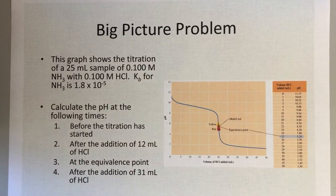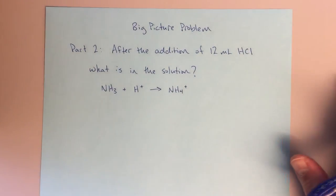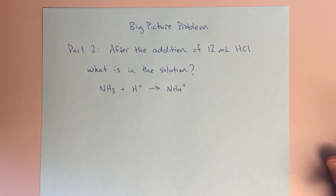Alright, so this video is for part two of the big picture problem, how to solve for the pH after the addition of 12 milliliters of HCl. In this one, this is going to be the first one that's a little bit more complicated. Actually, it's probably the most complicated part of this entire problem.